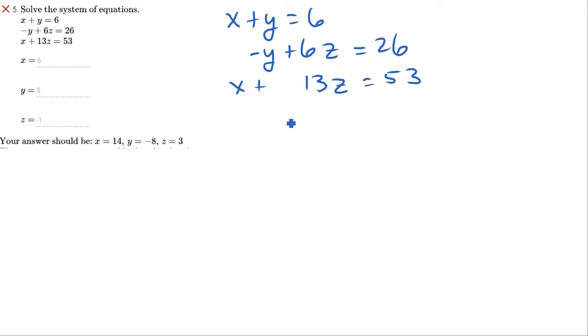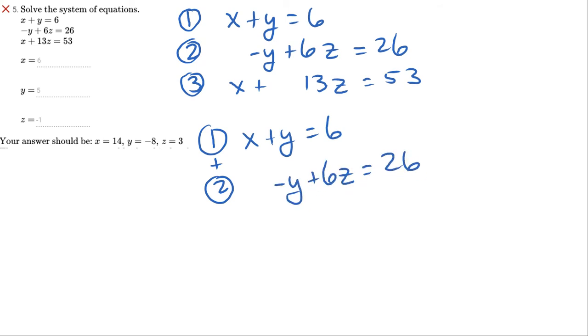So again, we want to get rid of a variable somehow. Again, maybe I'll just label. So first, second, third. What if I add my first two equations together? So if I add my first two equations together, I notice that my Y values will go away. So let's do that. Okay, so I'm going to do 1 plus 2. So X plus Y equals 6. Negative Y plus 6Z equals 26, right?